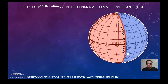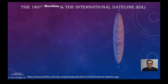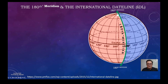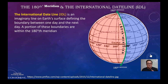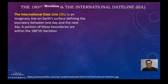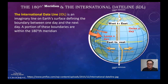The International Date Line (IDL) is an imaginary line on the Earth's surface defining the boundary between one day and the next. A portion of this boundary lies within the 180th meridian. The IDL is shown as the red line on the diagram.